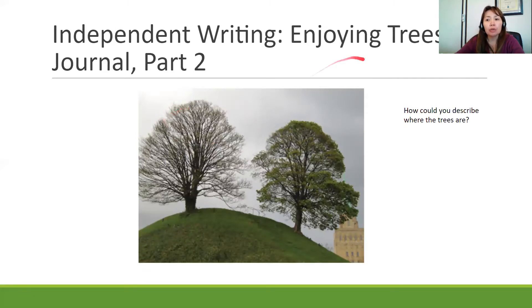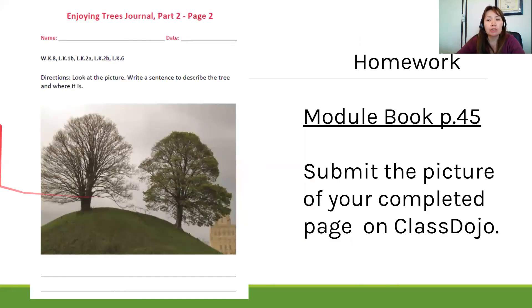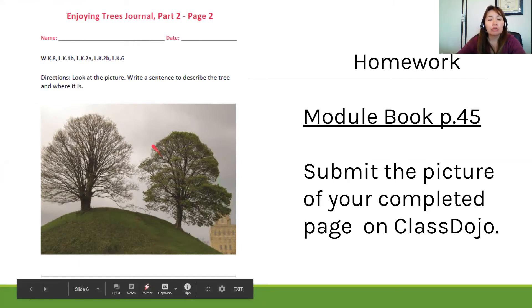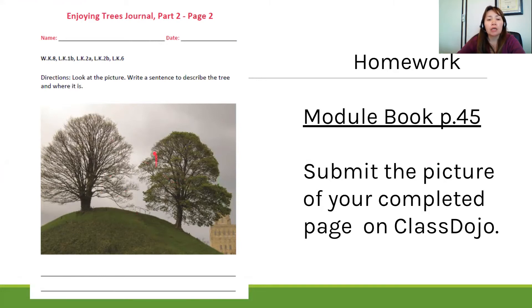And for your homework, you're going to describe where the trees are in your module book. So where do you think the trees are? What can you say? How can you start your sentence? The trees are on the hill, right? That's one of the sentences I can write to describe the picture. You're going to turn your module book to page 45, look at the picture, write a sentence to describe the tree and where it is, and submit the picture of your completed work on Class Dojo.